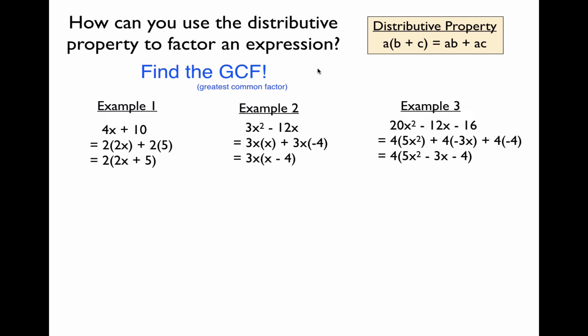So how can you use the distributive property to factor an expression? The distributive property states that a times b plus c equals a times b plus a times c. But this equals sign isn't just read left to right — we can read this equation from right to left as well. If you have an expression where you have a common factor a in two terms, a·b and a·c, you can rewrite that as a times the sum of b and c. You can take that factor out and remove it from the expression.